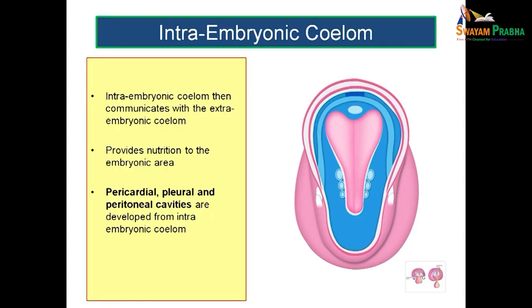This communication between intraembryonic and extraembryonic celome provides nourishment for the embryo. The intraembryonic celome gives rise to the pericardial cavity, pleural cavity, and peritoneal cavity — all the important body cavities. In the cephalic region it forms the pericardial cavity, in between the pleural cavities, and towards the caudal region the peritoneal cavity.